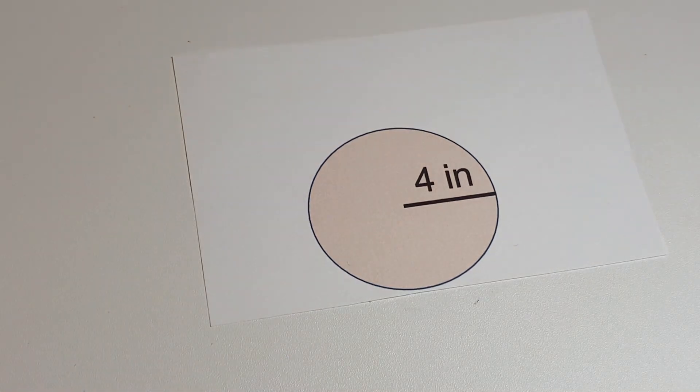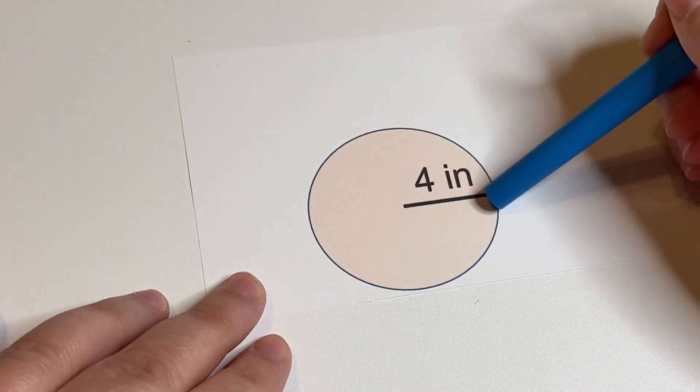So we'll start with a circle here. It's a four inch radius. Remember the radius is from the center to the outside.